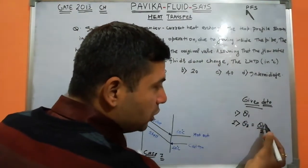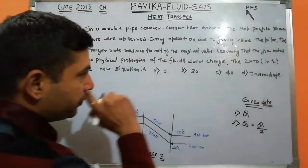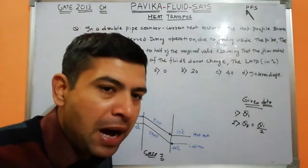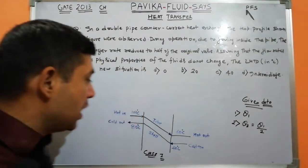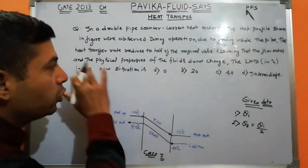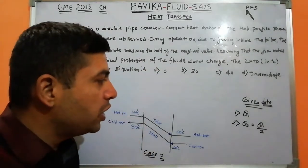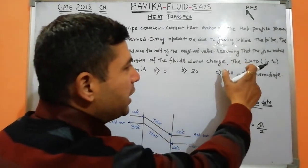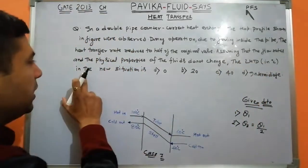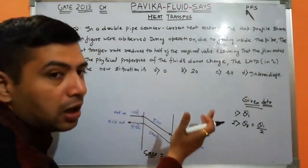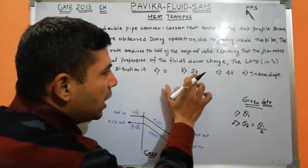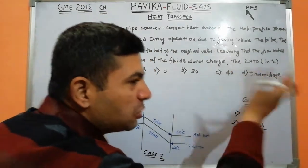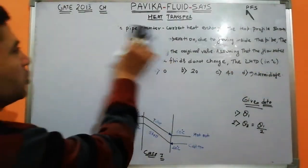Case 2 में जो heat transfer है वो Case 1 का half है: q2 = q1/2। यह assuming करते हैं कि flow rates और physical properties जैसे thermal conductivity, mass, specific heat — ये सब change नहीं हो रहीं। तो LMTD (log mean temperature difference) इस नए situation में क्या होगा? Options हैं: A) 0, B) 20°C, C) 40°C, या D) intermediate value।